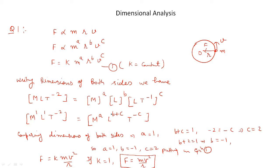We can now write the right-hand side as M^A, then L^B combined with L^C giving L^(B+C), and T^(−C). So the left side has M^1 · L^1 · T^(−2), and the right side has M^A · L^(B+C) · T^(−C). Now we will compare the powers of both sides.